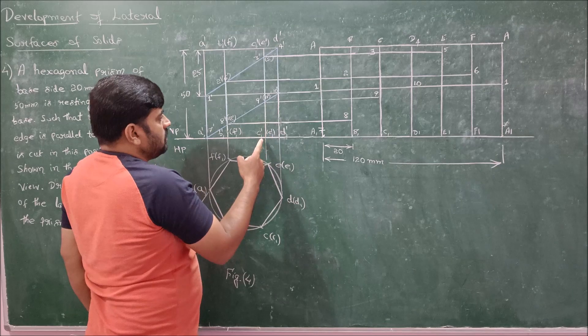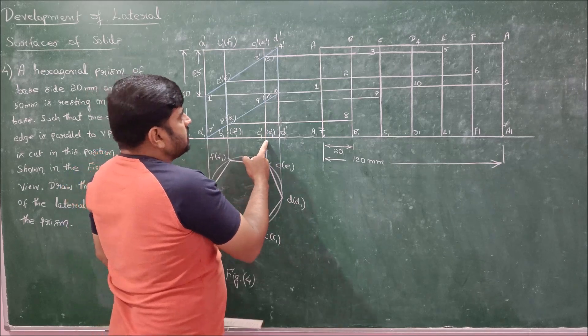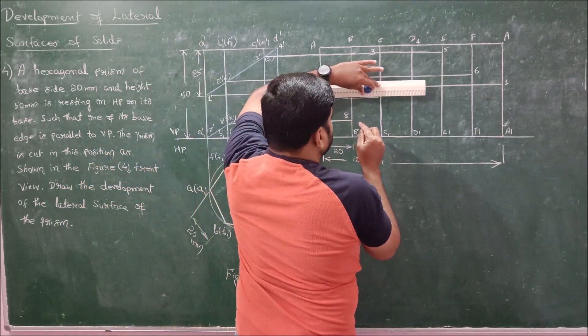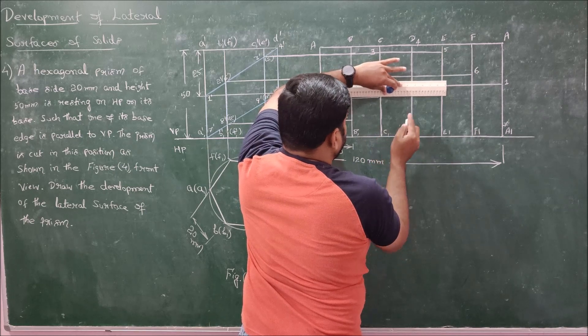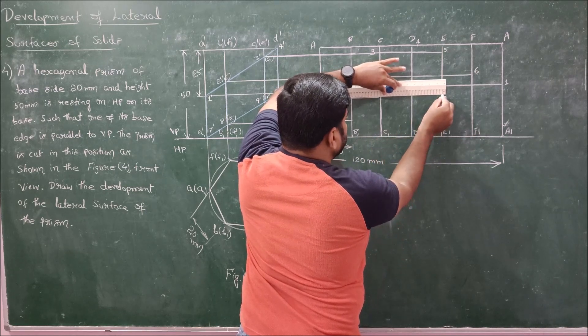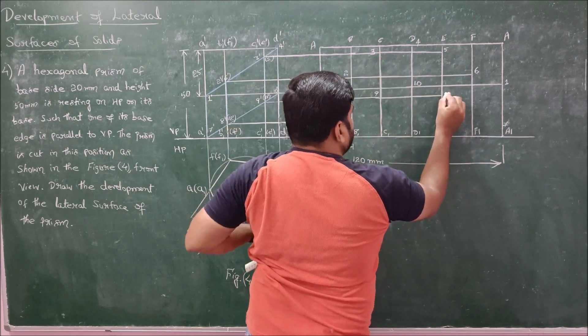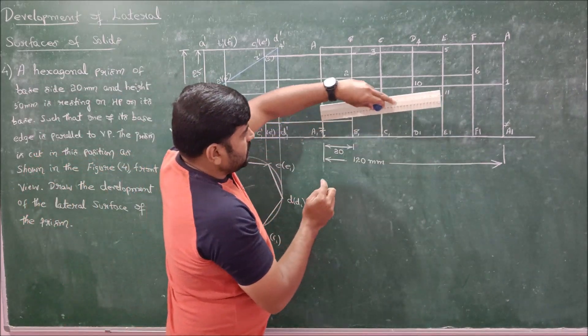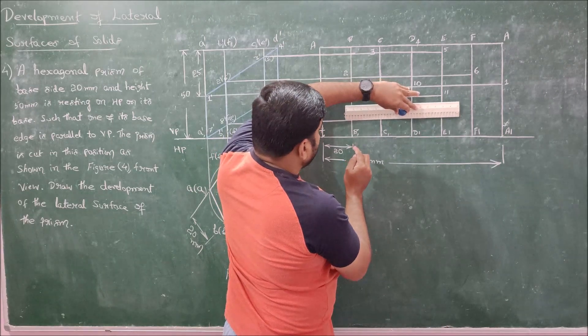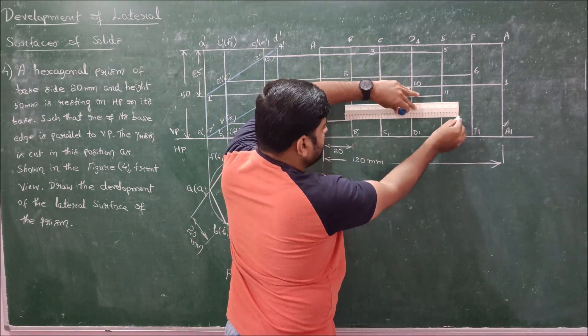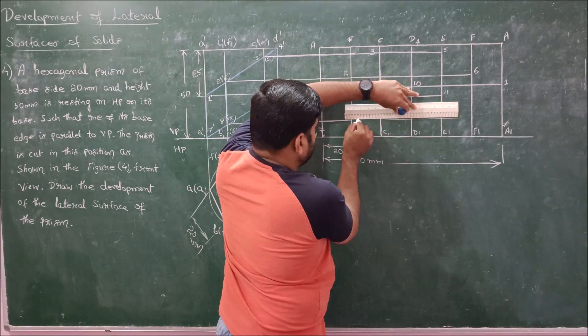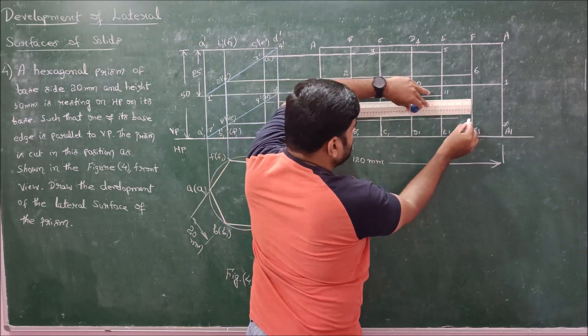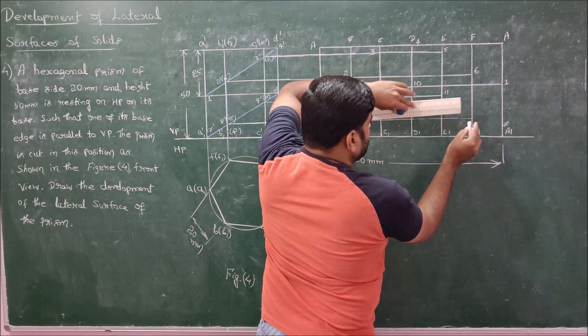Next 11 is on E1 dash E dash. So which is parallel to point 9. So extend point 9 till E. So you get 11. Next we have 12 on F1 dash F dash. So extend 8 till F1 F, extending 8 till F1 F, we get point number 12.